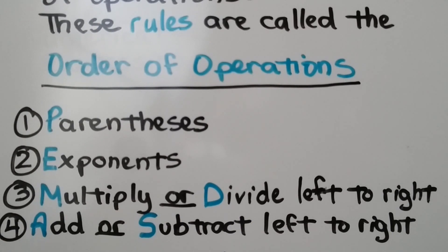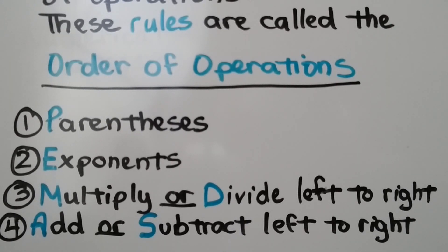The first thing we do is anything that's within parentheses. Next, we do any exponents. Then we multiply or divide from left to right, and then we add or subtract from left to right.